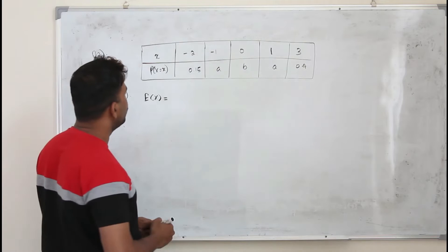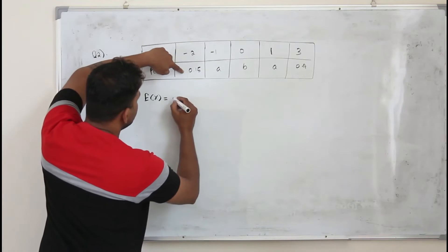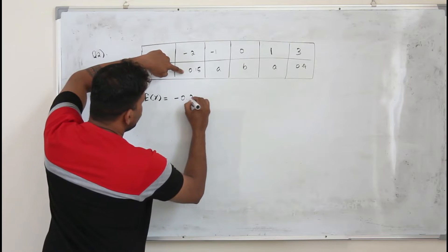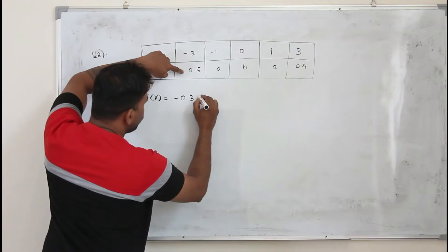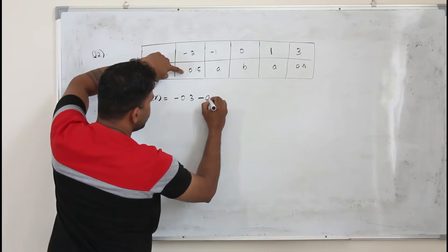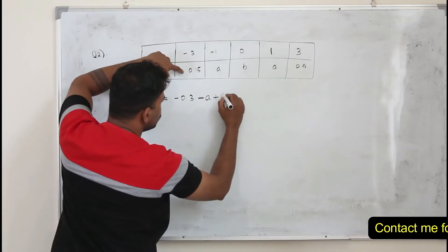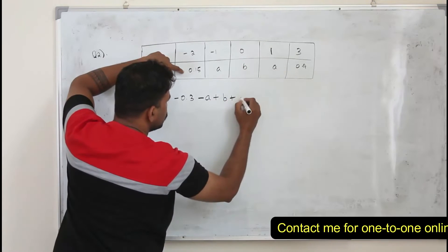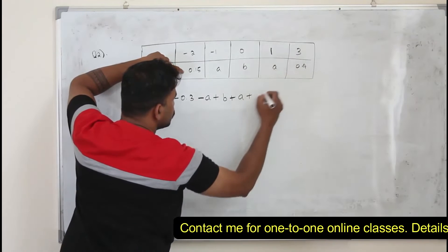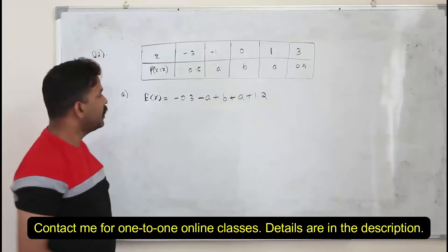How do we find the value of E of x? Take x and multiply by its probability. So it's minus 0.3 plus this times this, which is minus A, plus this times this, plus this times this, plus this times this. That's how we find the value of E of x.